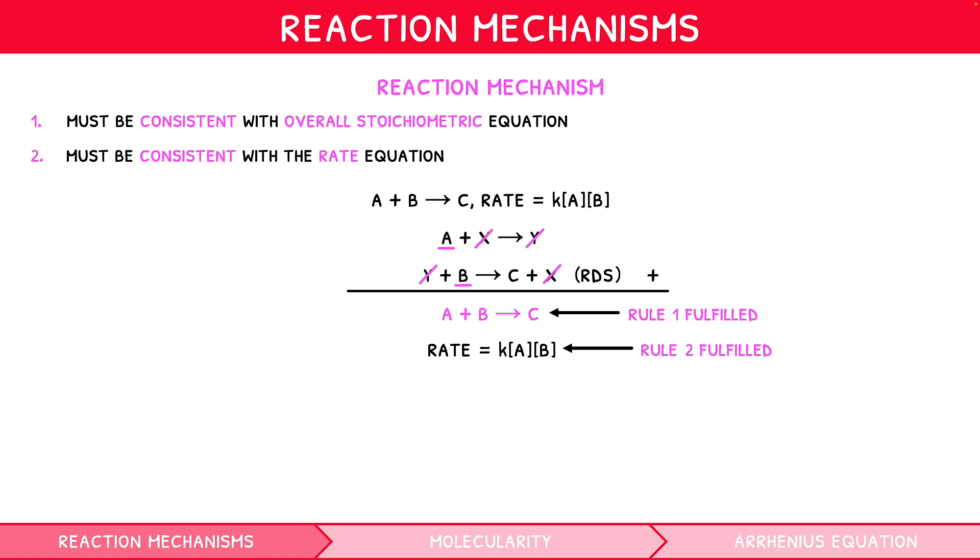Note, if the first step was made the rate-determining step, the overall rate expression would be rate equals KA, which would not fit the second rule, and so the mechanism would be incorrect. This is one method that can be used to determine which step of a mechanism is the rate-determining step.